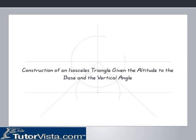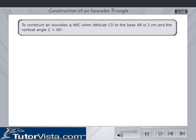Construction of an isosceles triangle given the altitude to the base and the vertical angle. It is required to construct an isosceles triangle ABC. The altitude CD perpendicular to base AB is 2 cm and the vertical angle C is equal to 90 degrees.